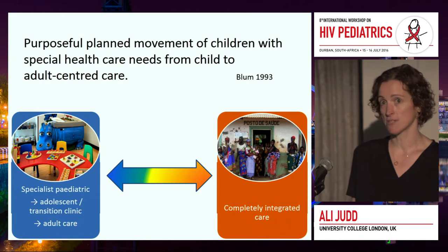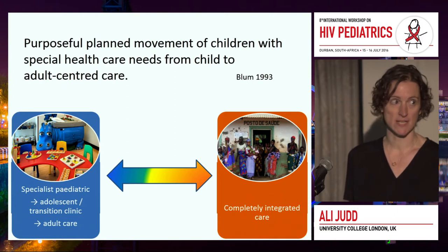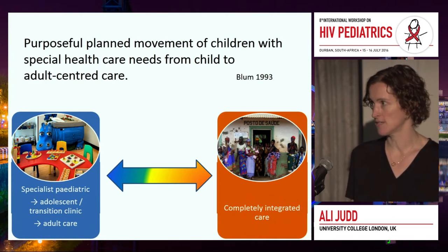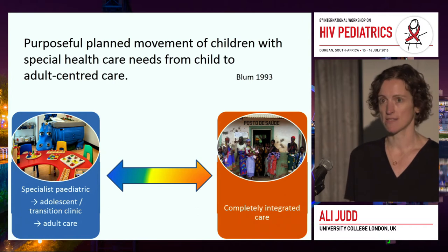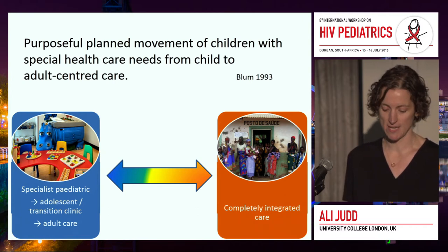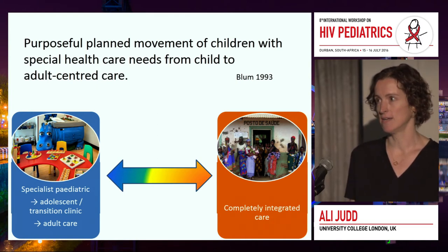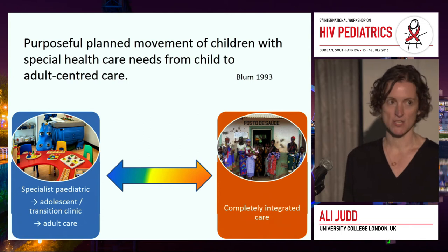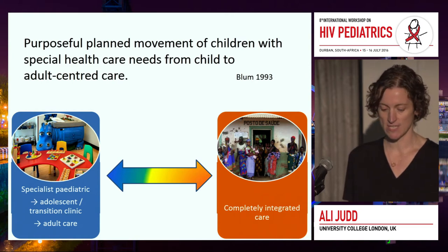For adolescents with horizontal HIV, where they're seen really depends on the country or the region. Some may be seen in adult care and therefore avoid the whole transition issue completely. Others may go to paediatric or adolescent care, and then transition comes into play. But in many low-resource settings, for example South Africa, most adults and children are seen together in primary care nurse-led clinics. Although there may not actually be any transfer in clinical care, transition may have a broader relevance — changes and milestones in adolescents' lives as they transition into adulthood.